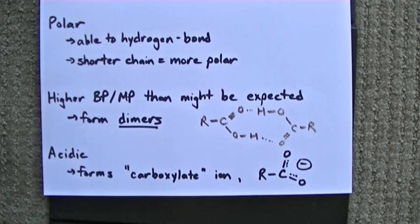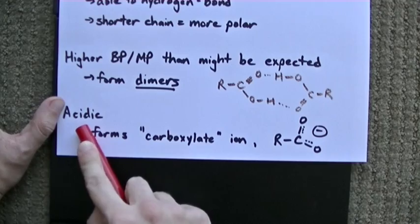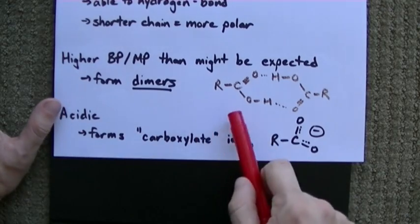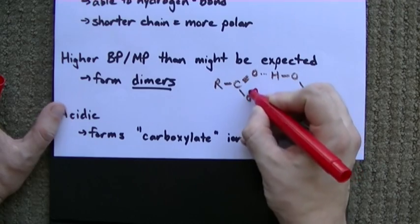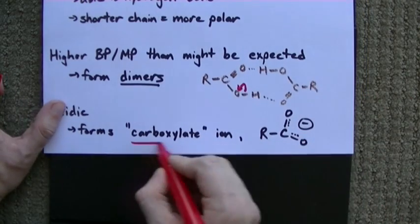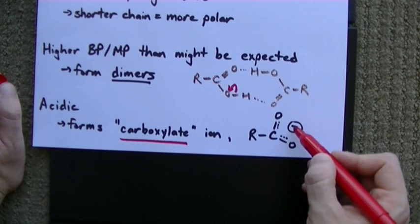And the last thing I want to point out, if it's not already obvious, is that these compounds are acidic. The H can easily come off. The electron pair goes to the oxygen, and you end up with something called a carboxylate ion, which is a COO with a minus charge.